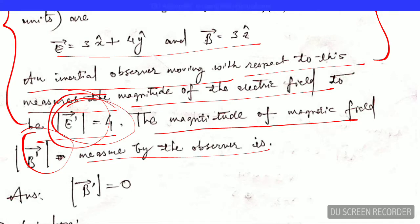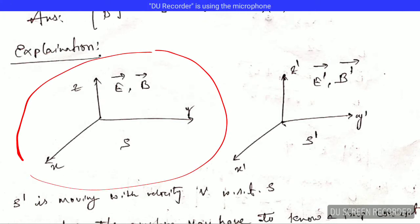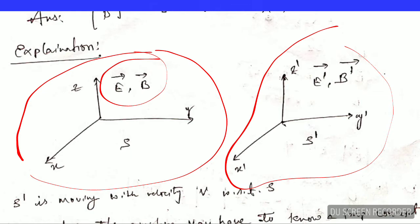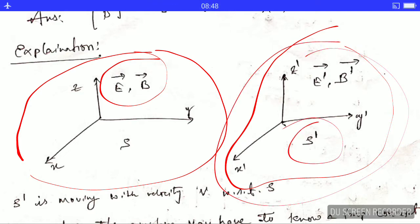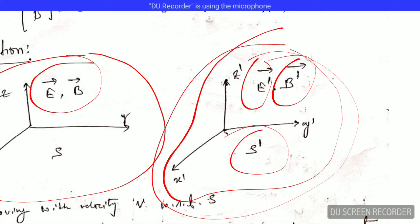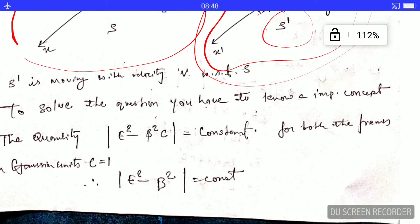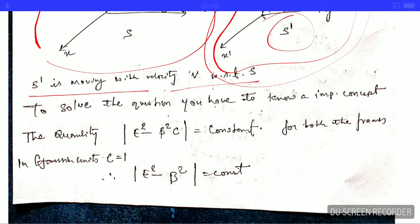I will show a diagram to understand the setup. We have frame S in which the electric and magnetic fields are E and B. There is another observer moving, so we attach an inertial frame S prime to that observer. In frame S prime, the observer measures electric field E prime and magnetic field B prime. The value of E prime is already known, but B prime is not known — that is what we need to calculate. S prime is moving with velocity v with respect to S.